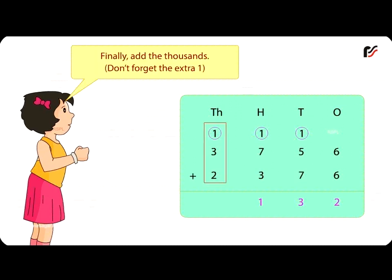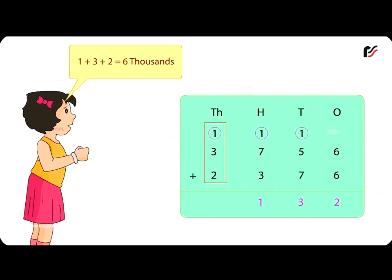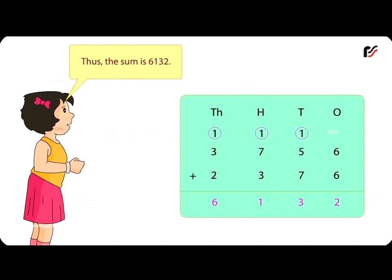Finally add the 1000's. Don't forget the extra 1. 1 plus 3 plus 2 is equal to 6,000's. Thus, the sum is 6,132.